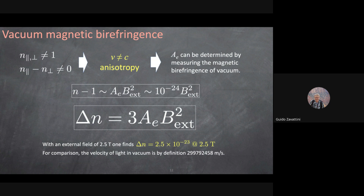There are two ways to make a differential measurement. One is a polarimeter that measures directly the difference in index of refraction — what we are doing. The other, sometimes proposed, is to place a magnetic field on a gravitational wave antenna — a huge interferometer — which measures the optical path, which is the index of refraction times the length. Both require differential measurement.